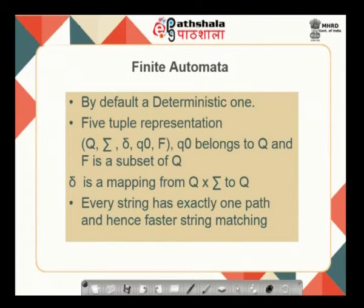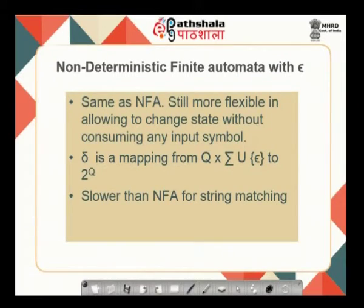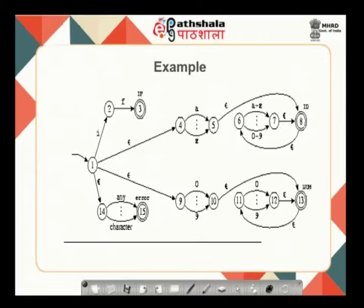A deterministic finite automata is really fast in string matching because there is exactly one path from the start state to the final state for every valid string; if the string is invalid, there is no path at all. A non-deterministic finite automata takes a little more time because there are multiple paths, and if even one path leads from the start to the final state, the string is valid. An NFA with epsilon moves is even slower because you can go from one state to another without consuming any input symbol. For example, a pattern for 'if' is simply I followed by F, where the final state corresponds to the token 'if' and returns the attribute keyword.